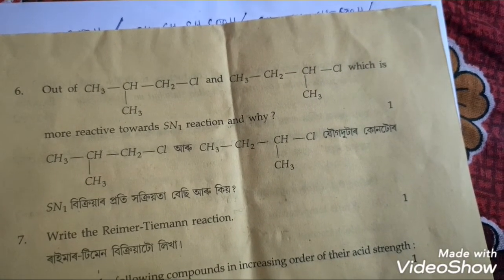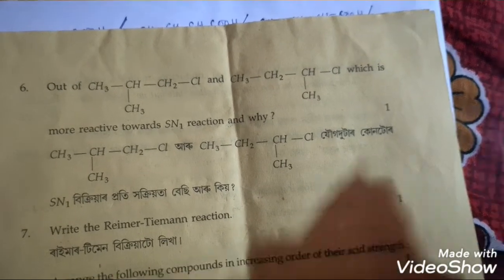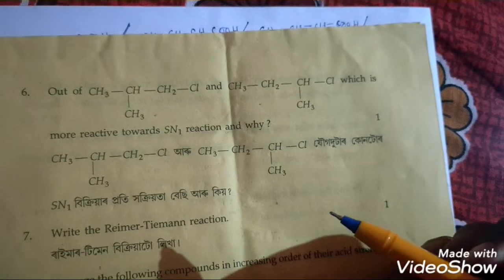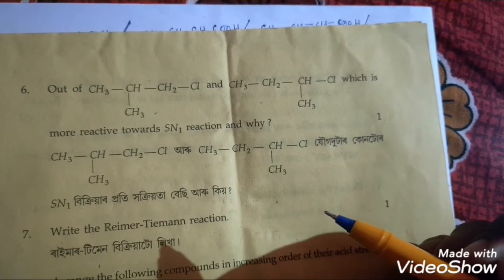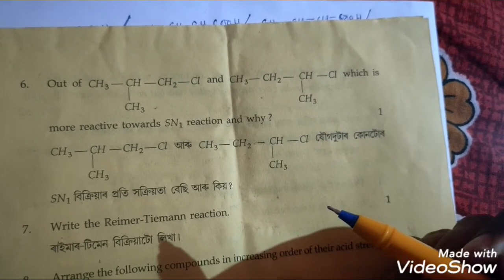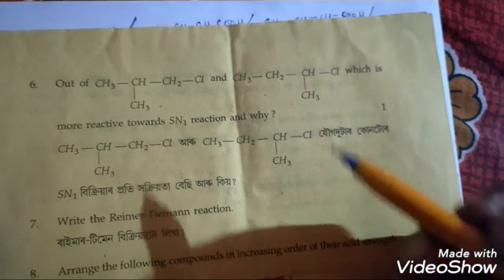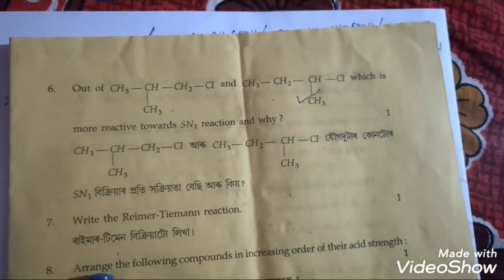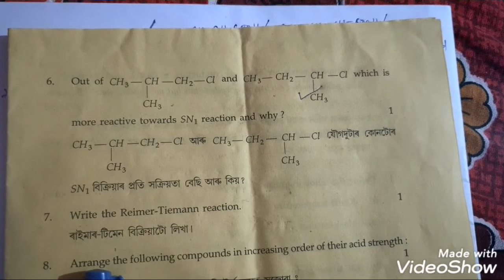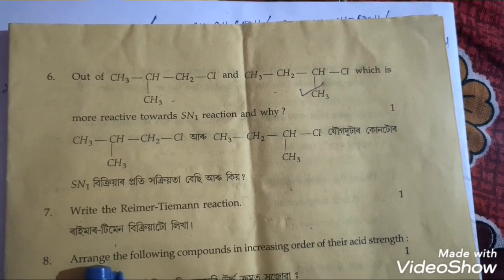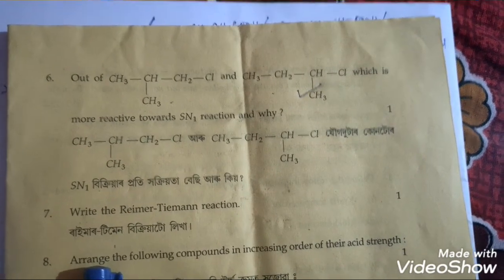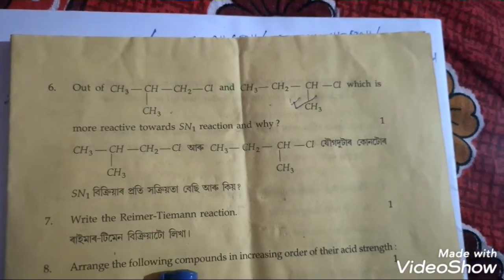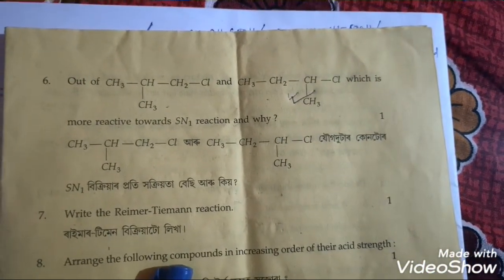Question six: out of the two given compounds, which is more reactive towards SN1 reaction and why? The correct answer is the secondary alkyl halide, because a secondary alkyl halide is more reactive towards SN1 reaction than a primary alkyl halide.